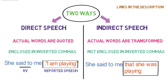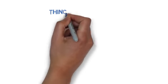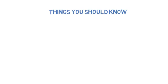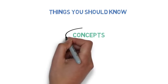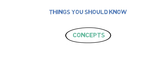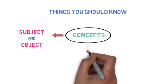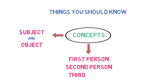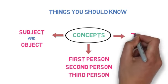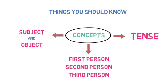We will now look at how we can convert a direct speech into indirect speech. But before we begin to understand the conversion, there are certain things you should very well know. There are three important concepts that you must understand properly: first, what is subject and object in the sentence; second, what is first person, second person and third person; and third, what is tense.